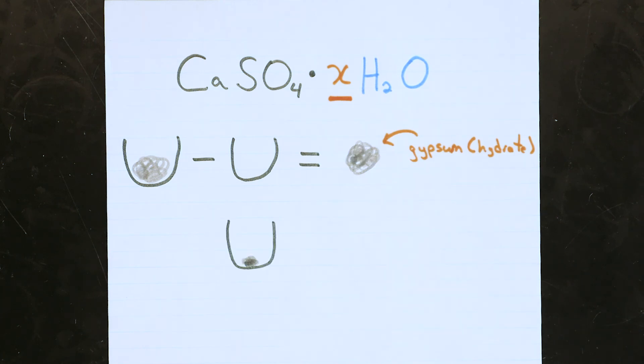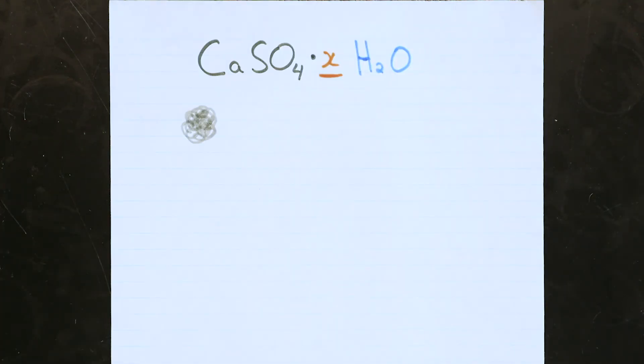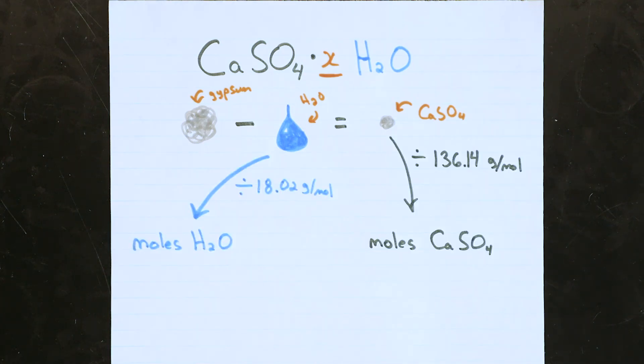We also know the mass of the crucible and the sample after we heated it. That will allow us to work out the mass of water that we lost from the hydrate by heating it. So the mass of the hydrate minus the mass of the water will give us the mass of the dry calcium sulfate residue, and we can use each of those to work out how many moles of water and calcium sulfate we had.